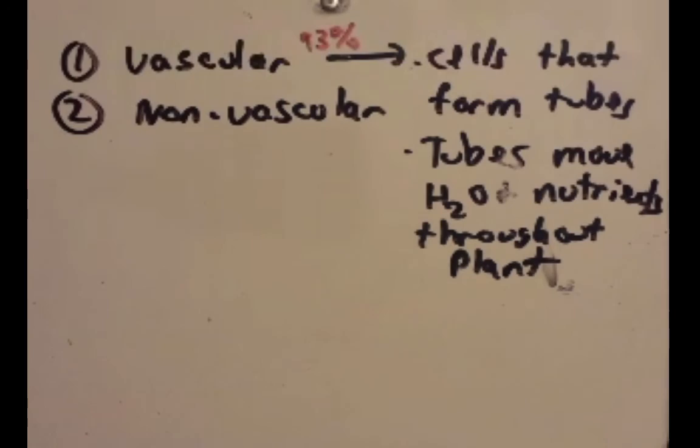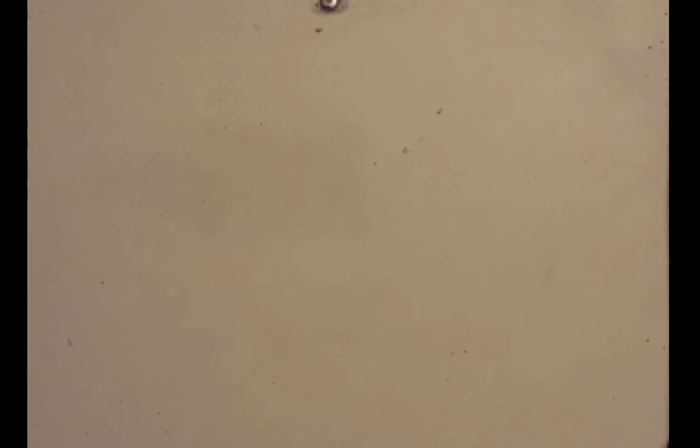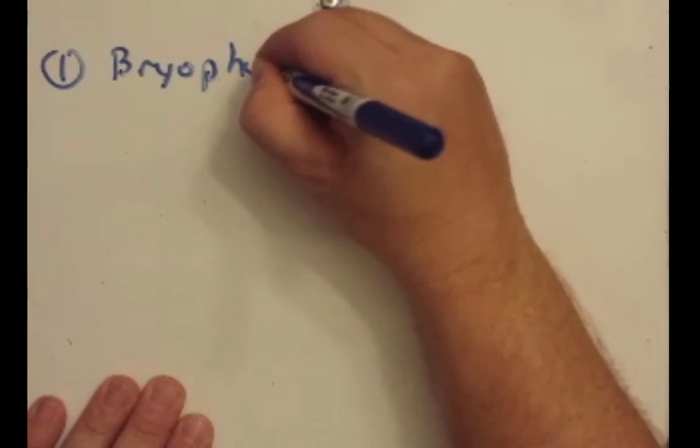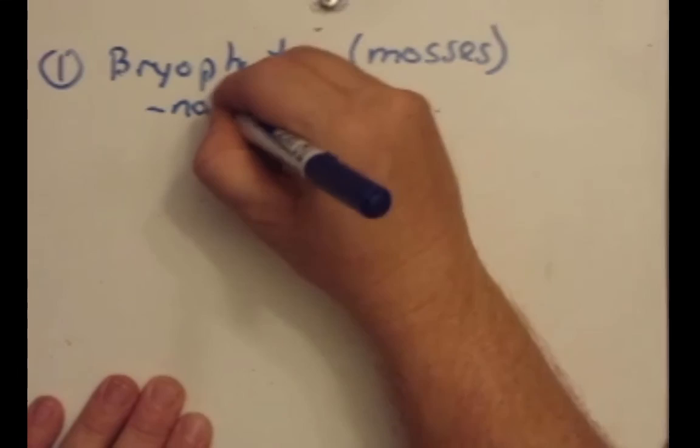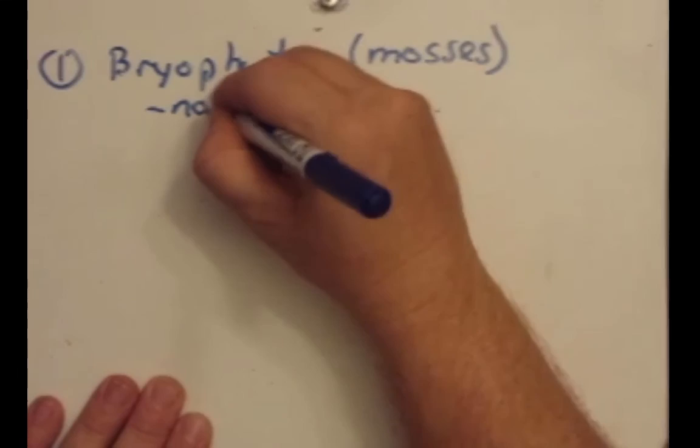Now we can break down all plants using vascular or non-vascular into four groups. The next podcasts are going to focus on each of these groups, but let's mention them real quick. We have the bryophytes. And these are like our mosses that you may see outside. The key feature of the bryophytes is that they are non-vascular. They are the only group that is non-vascular.